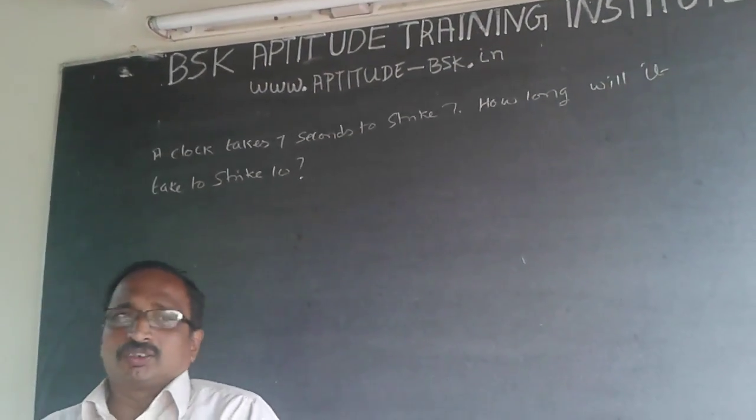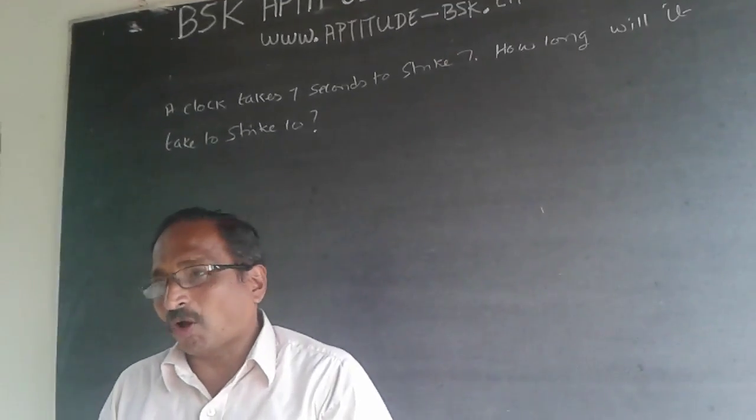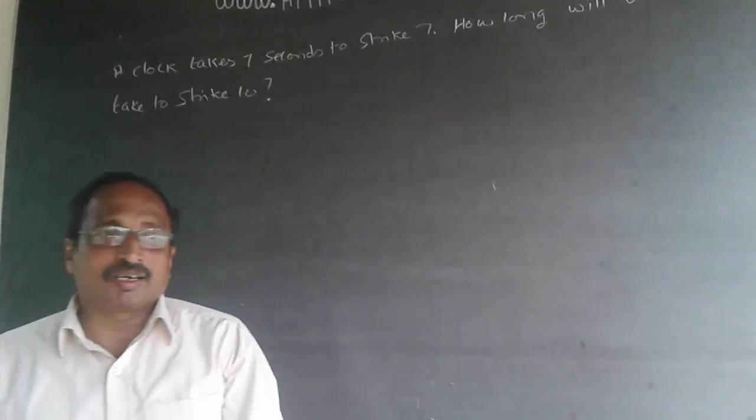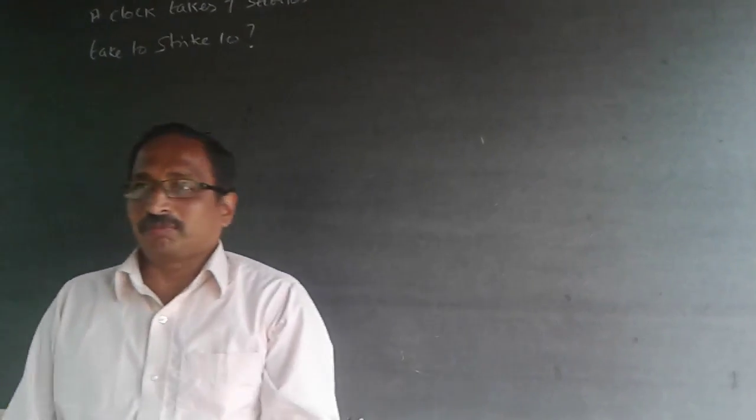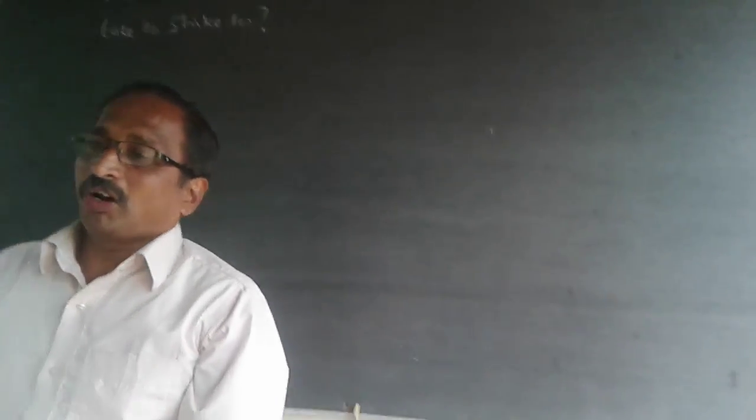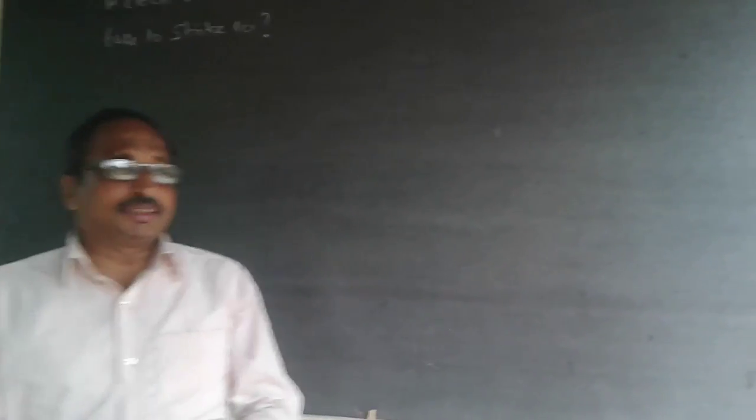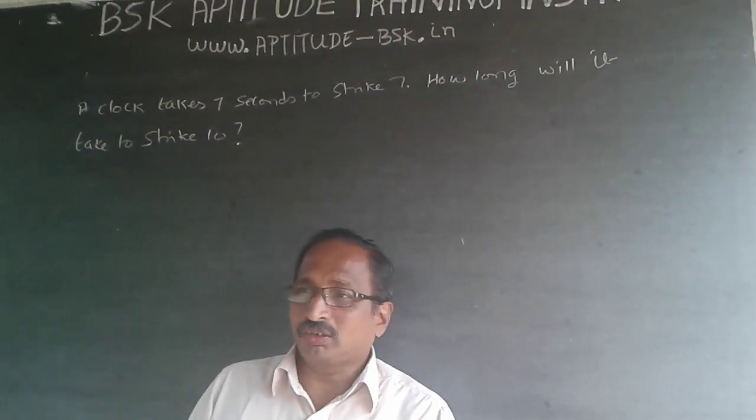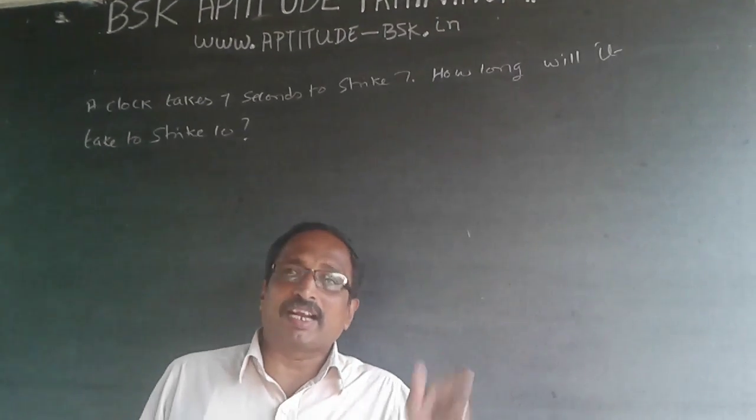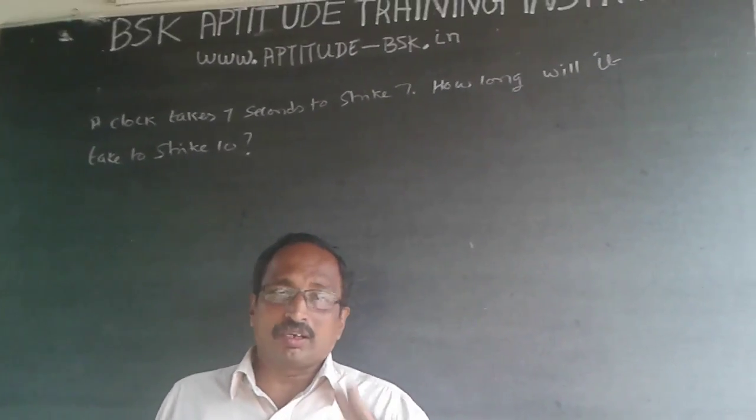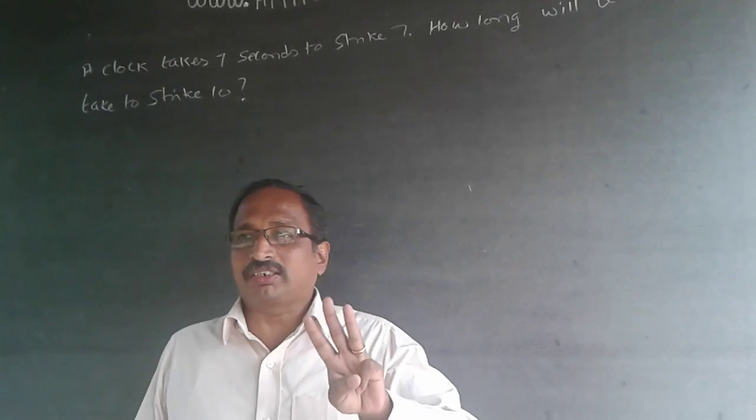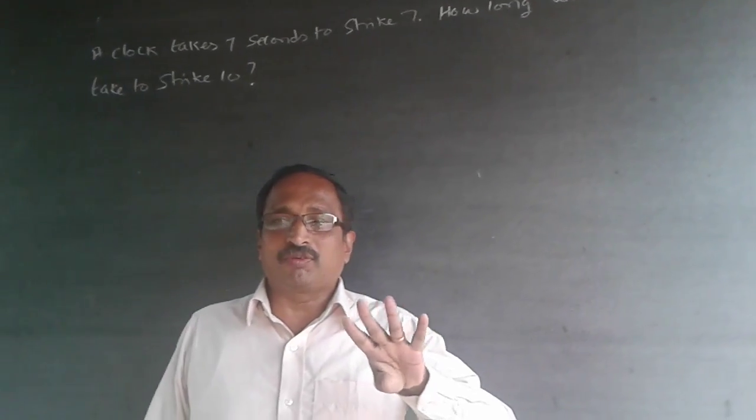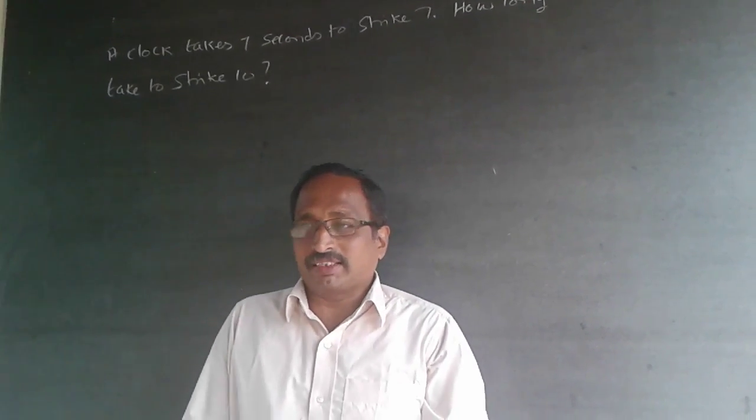This is a simple logical question, probably on clocks, but nothing to do with the clock problem. See what happens is, in golden days we had clocks where at 1 o'clock it will strike exactly 1, at 2 o'clock it will strike 2, at 3 o'clock it will strike 3, 4 o'clock it will strike 4, 5 o'clock it will strike 5, like that.